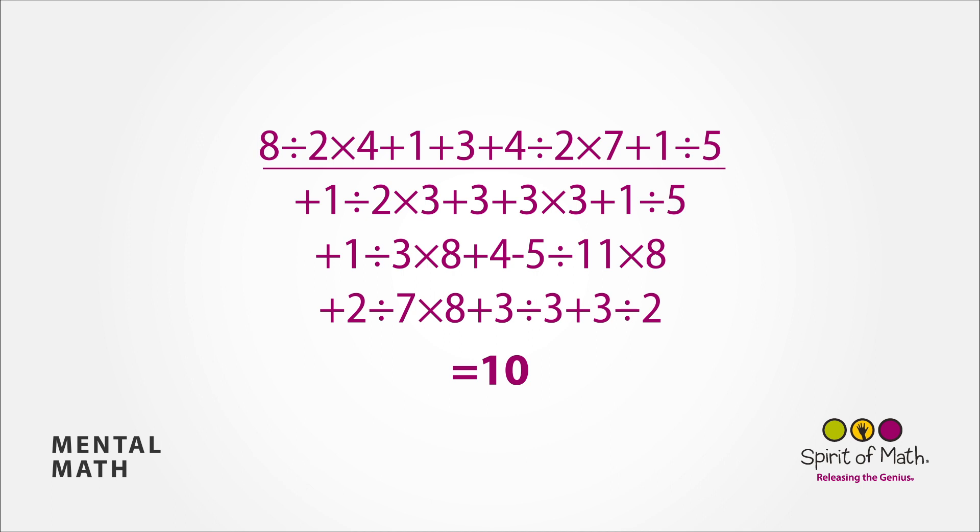Divide that by 5, gives you 17 and add 1, is 18. Divide that by 2, gives you 9 and multiply it by 3, is 27. Add 3, is 30 and add another 3, is 33.